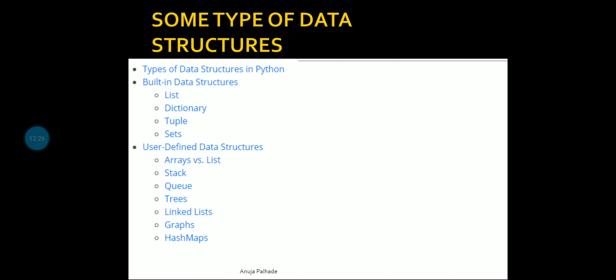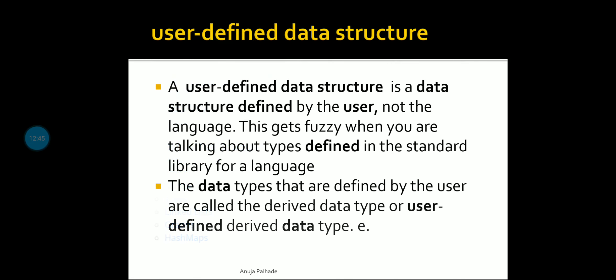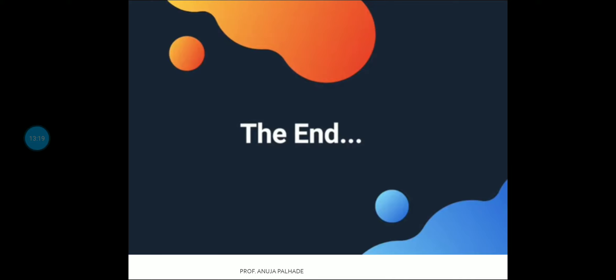Here are some specific types of data structures: built-in types include array, stack, queue, tree, linked list, graph, and hash maps. Trees have further subtypes such as AVL tree, red-black tree. Queues have types like deque and circular queue. User-defined data structure is a data structure defined by the user, not the language. The data types defined by the user are called derived data types, or user-defined data types — you can use either term, both are fine.